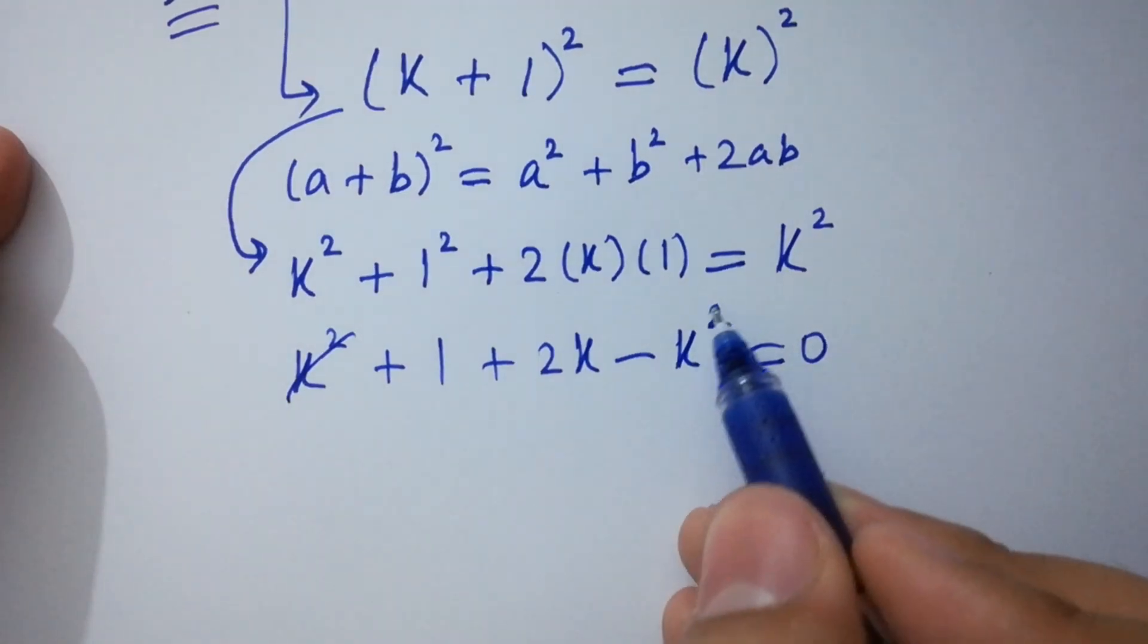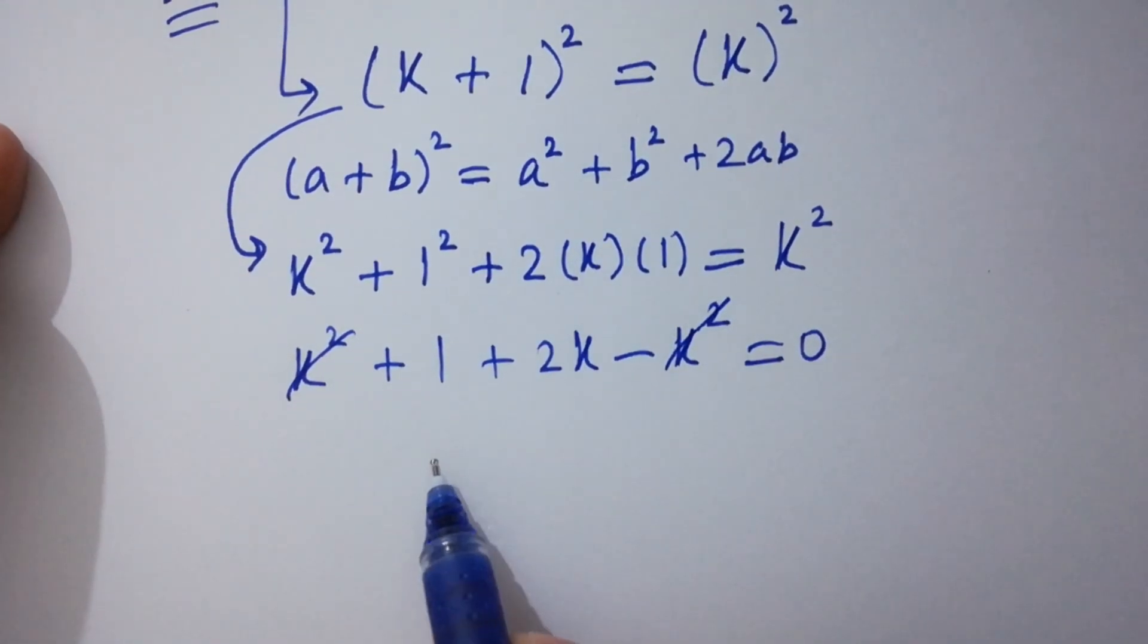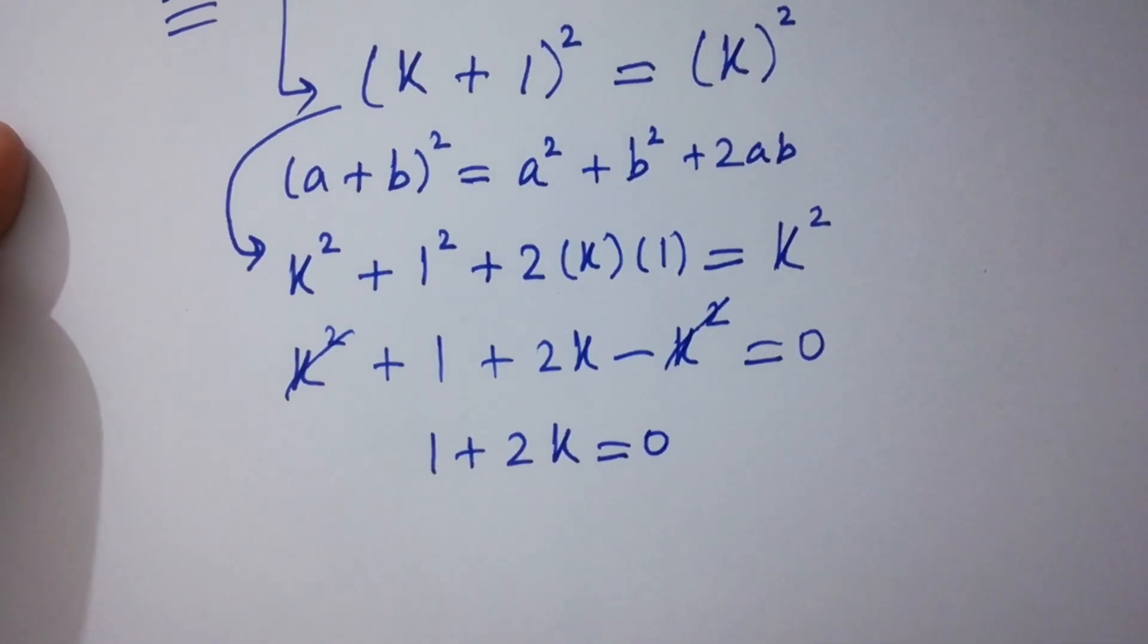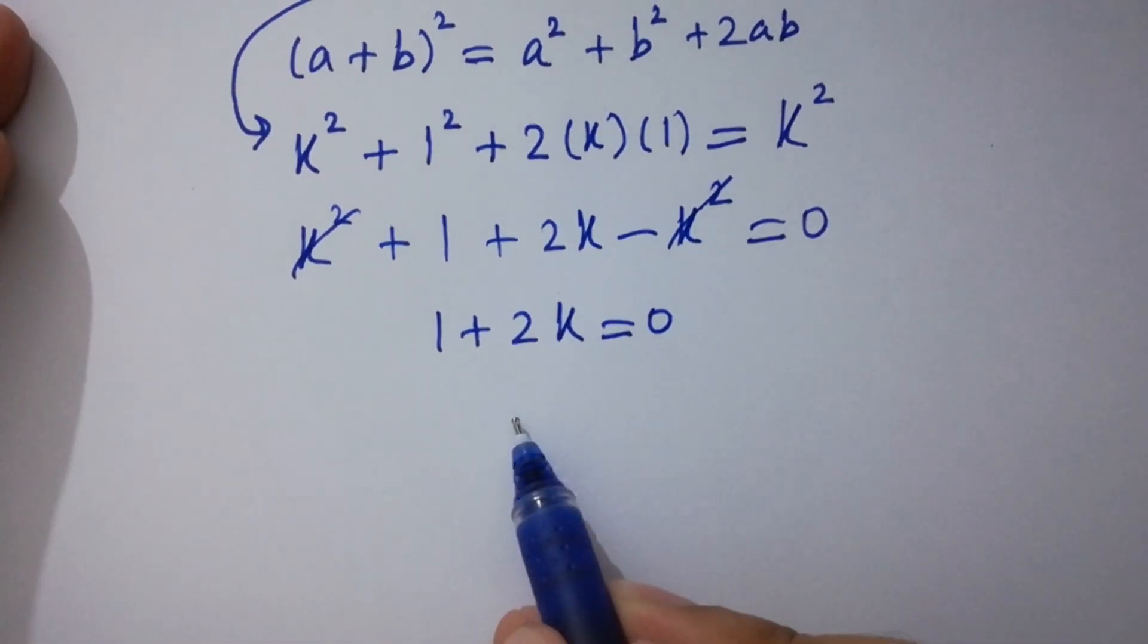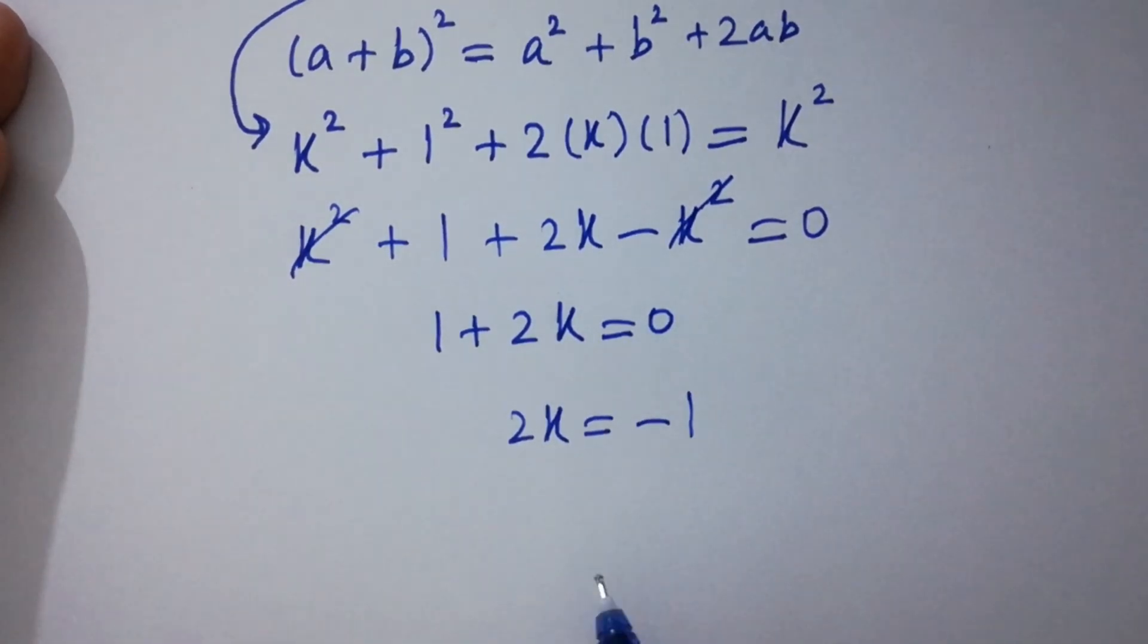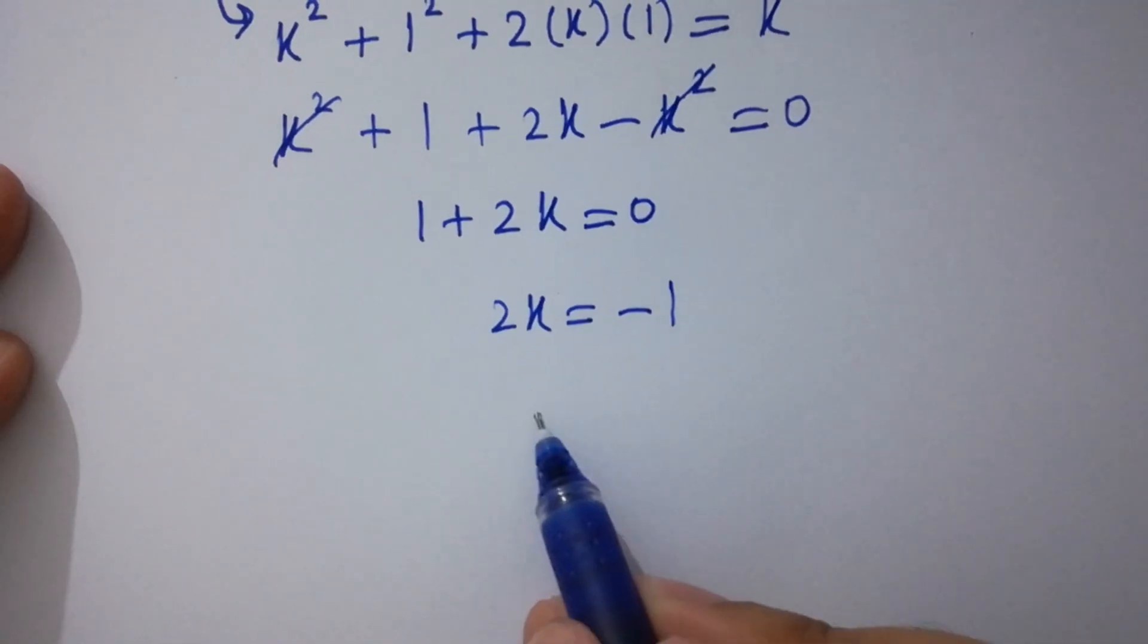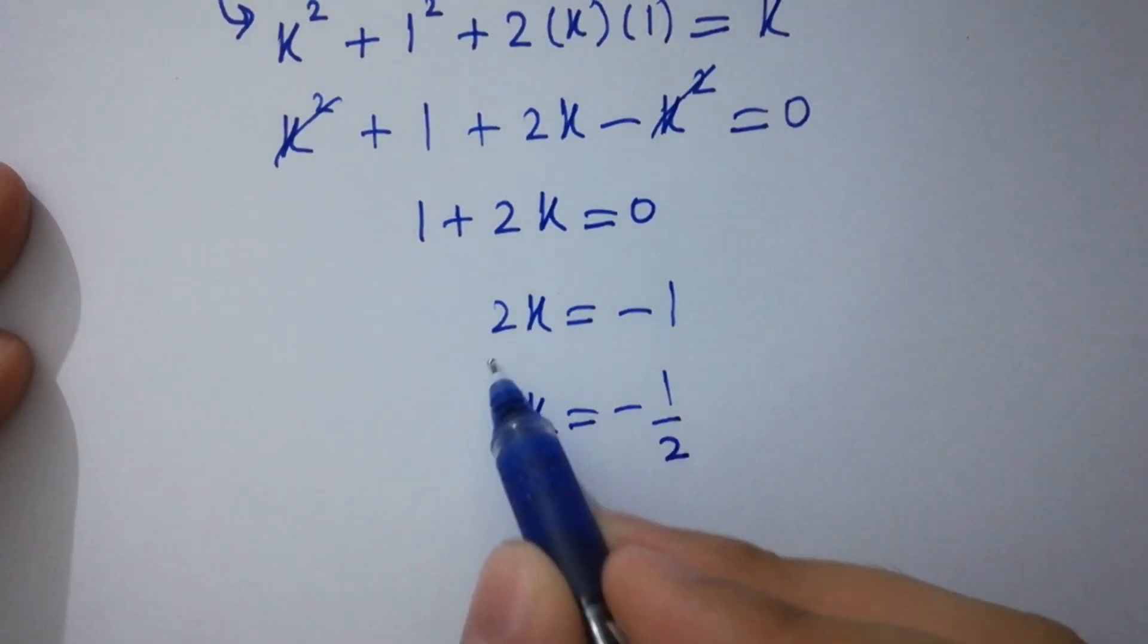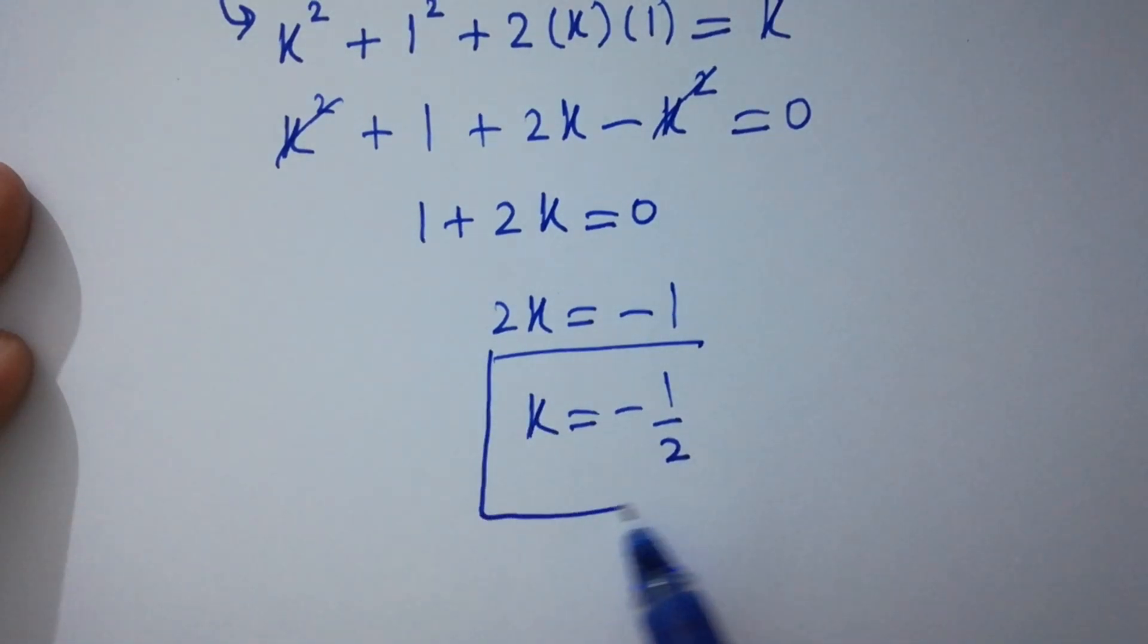k square and k square cancels. We get 1 plus 2k equal to 0. 2k equal to minus 1. We get k equal to minus 1 over 2 which is the value of k.